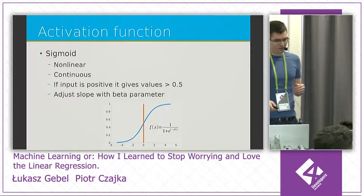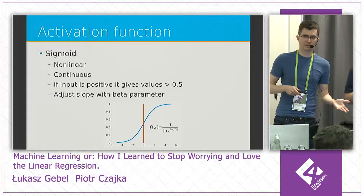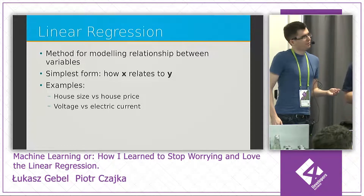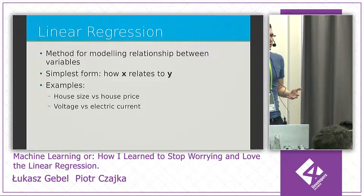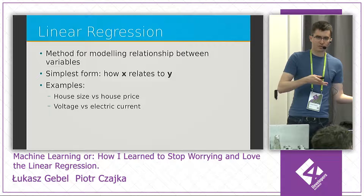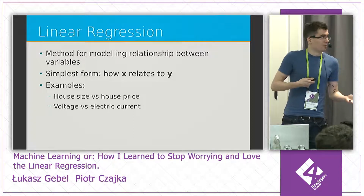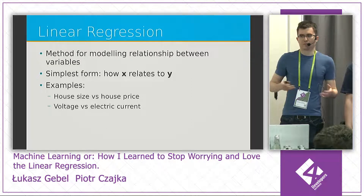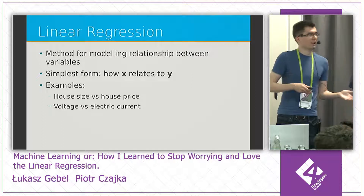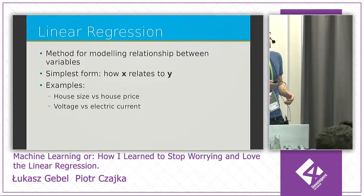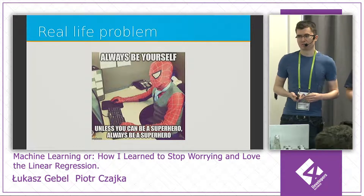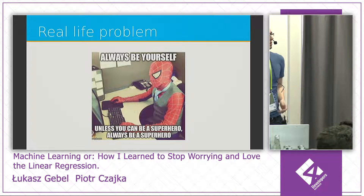The problem with neural networks is that they are quite hard to understand, especially for beginners. That's where linear regression comes to the rescue. The interesting fact is that linear regression uses very similar mathematical apparatus to what's used in neural network training, but it's easier to explain. Linear regression is simply a method for modeling relationships between variables — like how house price relates to house size. Let's explain it using real-life problems — specifically, the real life of superheroes, since they're everywhere in cinemas, comic books, and our culture.